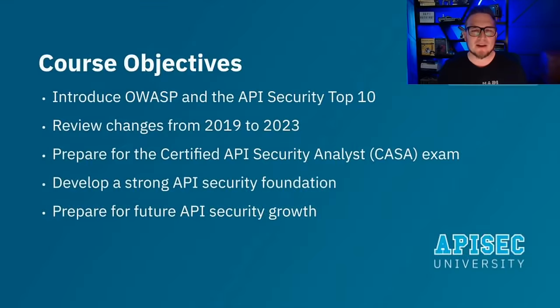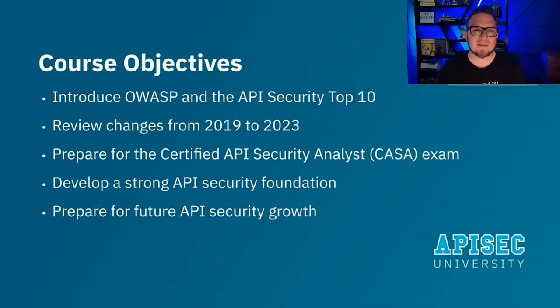The objective of this course is to help students become API security professionals and identify and reduce API-related security risks. OWASP API Security Top 10 and Beyond is meant to improve the skills of bug bounty hunters, developers, penetration testers, organizational leadership, and anyone else interested in API security. Course objectives include an introduction to OWASP, the API security project, and the changes from the 2019 to the 2023 version, as well as preparing students to pass the CASA exam.